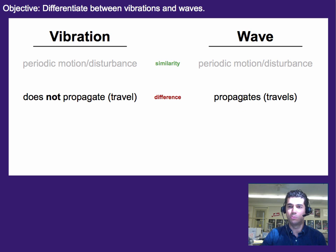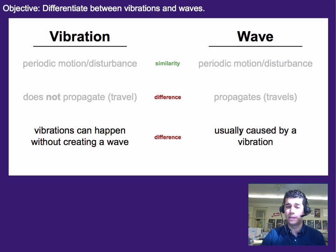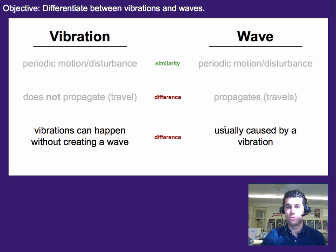A wave travels across the room, or across the country, or even across the universe in some cases. Lastly, vibrations can happen without creating a wave — there are cases where things can vibrate and no wave is created. However, in most cases a wave is created by a vibration, so in order for a wave to happen some vibration needs to have occurred. Think back to the sound — the only reason the sound was created is because the guitar string was vibrating.